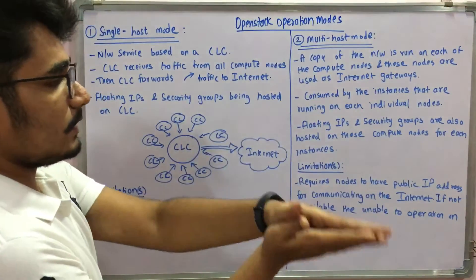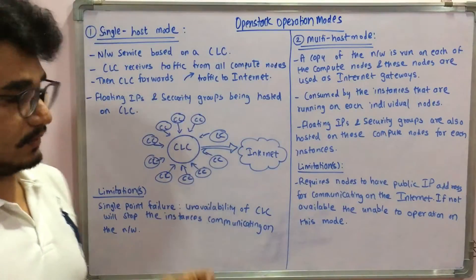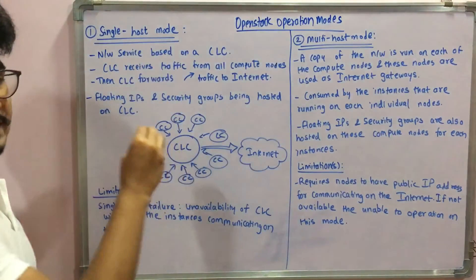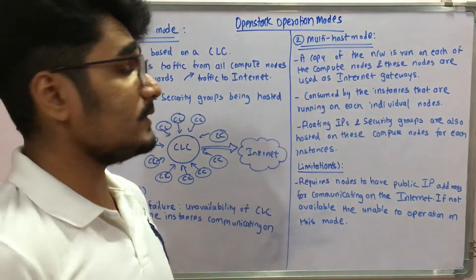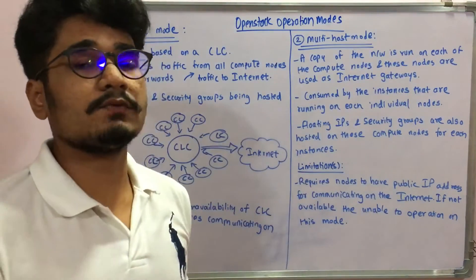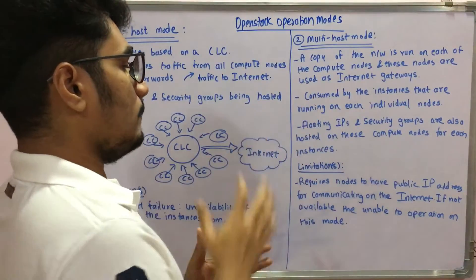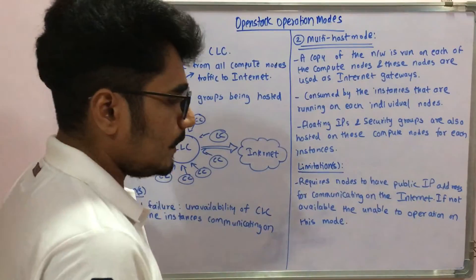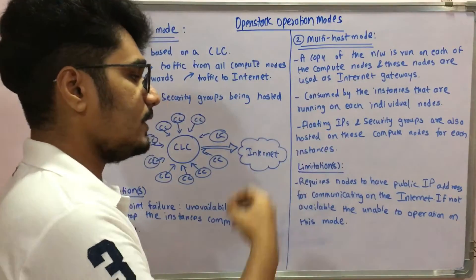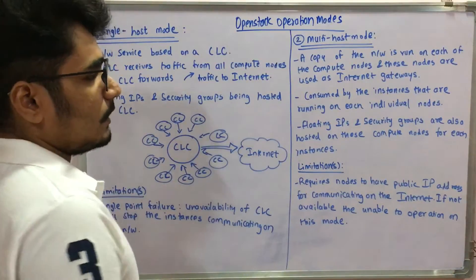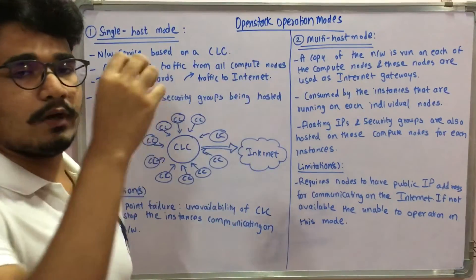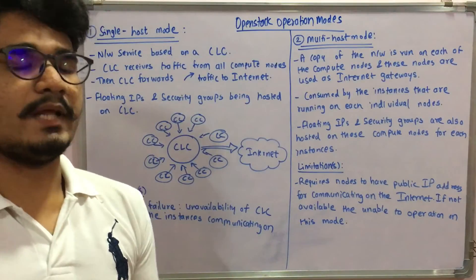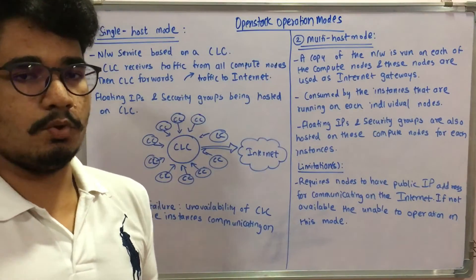In multi-host mode, floating IPs and security groups are hosted on each individual compute node for each instance — unlike single host mode where they are only on the CLC. However, a major limitation is that each compute node requires a public IP address to communicate on the internet. If public IPs are not available, the mode cannot operate, making it a difficult and resource-intensive configuration.